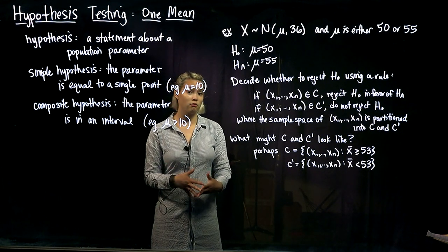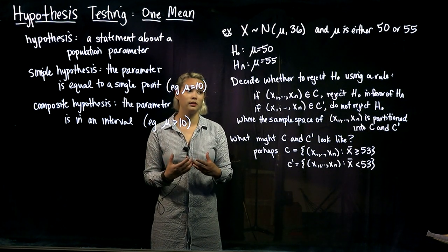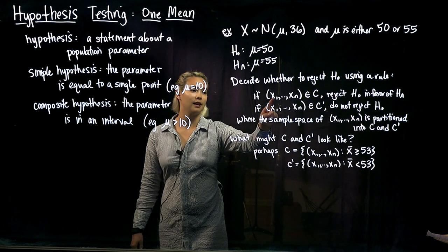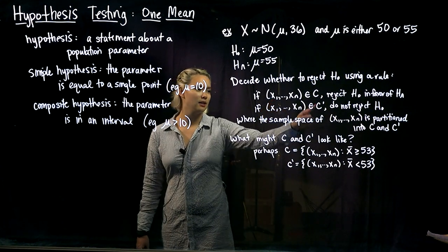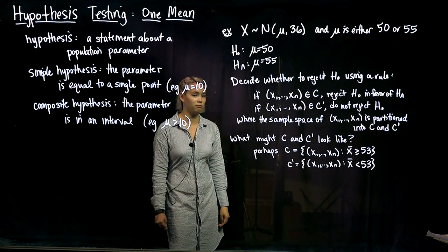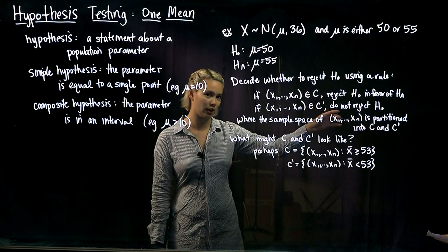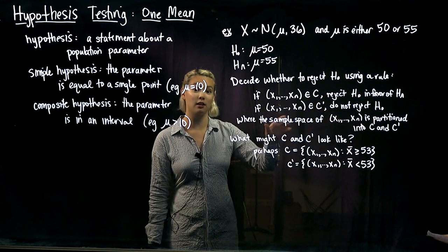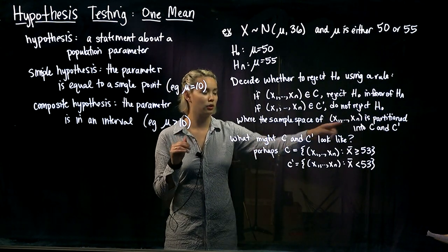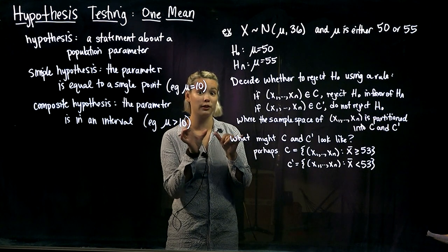So how do we actually decide whether to reject the null hypothesis or not? We form some kind of rule that tells us whether or not to reject the null. If the set x1 through xn is in some region C, we reject the null in favor of the alternative. If it's in C prime, we do not reject the null. We've partitioned our sample space for x1 through xn into two pieces — C and C prime — whose union gives the entire sample space and which do not overlap at all.